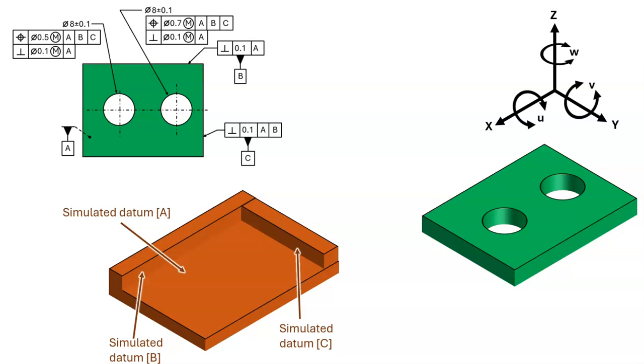The lower left portion of the slide shows the gauge for constraining the six degrees of freedom. The gauge has three mutually perpendicular walls that establish simulated datums A, B, and C.